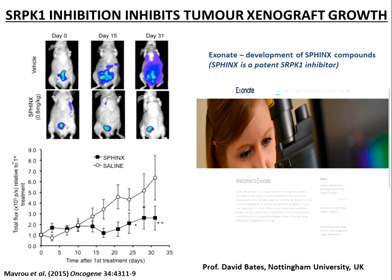In one experiment done in collaboration with Sebastian Oltian's group at Exeter University, prostate cancer cells were injected orthotopically into nude immunocompromised mice — directly into the mouse prostate — with a fluorescent tracker to follow their spread. In the control, over a period of a month, the tumor cells spread all over the abdomen. But in mice treated with Sphinx, the tumor cells really struggled to grow, as quantified in the graph. The inhibition of this splice factor kinase seems to have potent anti-cancer properties without adversely affecting the mice at the doses given.